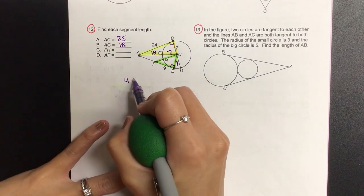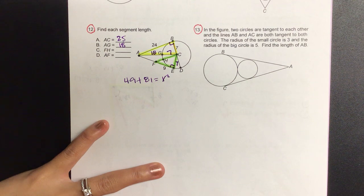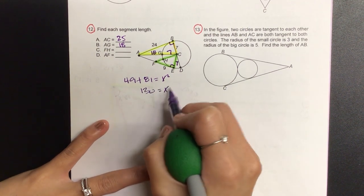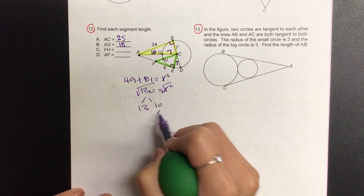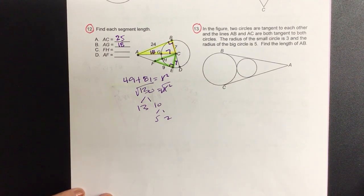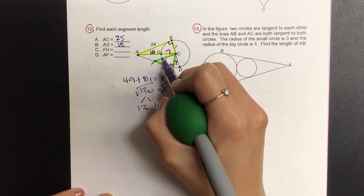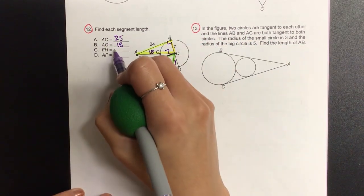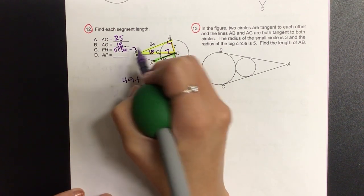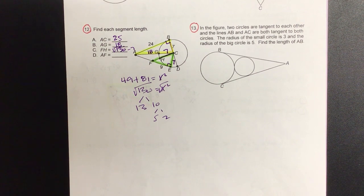So when y'all did 49 plus 81 is equal to, I'm just going to say x squared. Wasn't that 130? Yeah. So then when I square root this, let's kind of think about what would actually split. We know we have 13 times 10 and then 5 and 2. Do I have a pair? No. So the whole thing for the x is going to be radical 130, but we want to also take away what? The 7, because we only want FH. So we have radical 130 minus the 7. It looks pretty fancy only because radical 130 cannot further split, or it's not a whole number. So it's radical 130 minus 7.